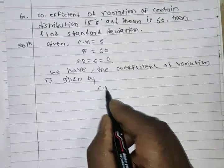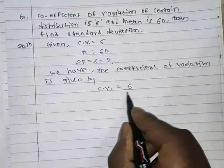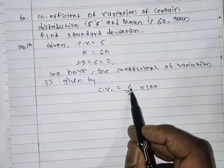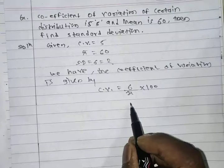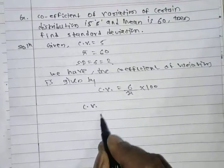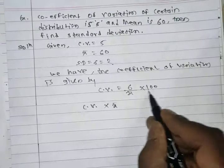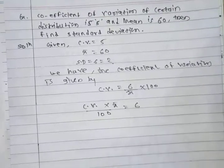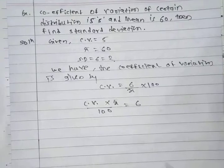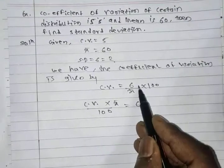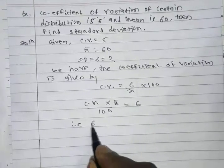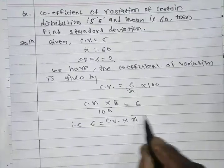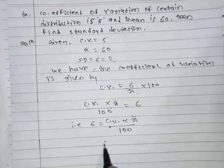Since we need to find sigma, we rearrange: multiply x-bar to the other side and divide 100, giving sigma equals coefficient of variance multiplied by x-bar, divided by 100.